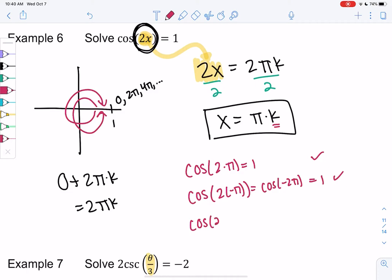Let's try k equals 5. So cosine of 10π, which basically just means we do 5 circles. 1, 2, 3, 4, 5. We still end up in the same spot, so it's 1.